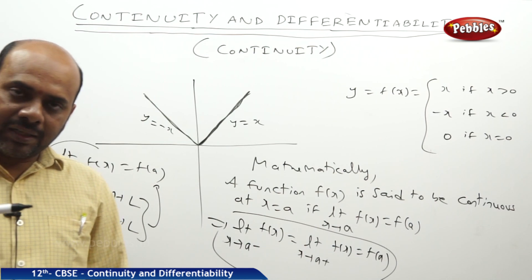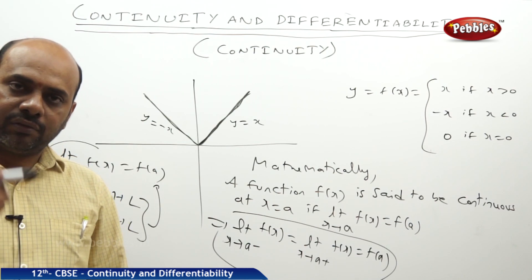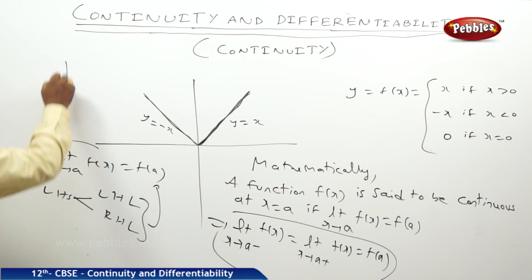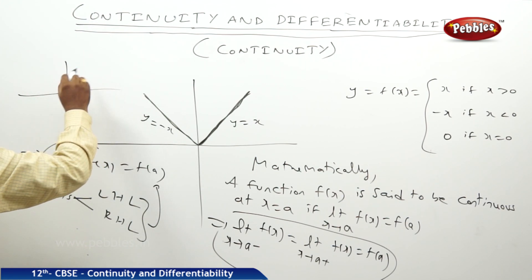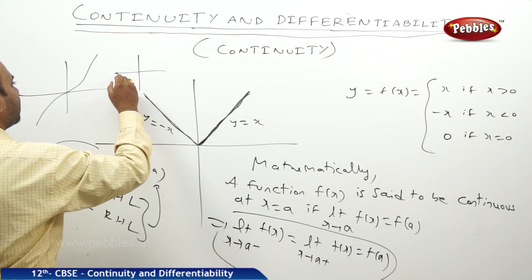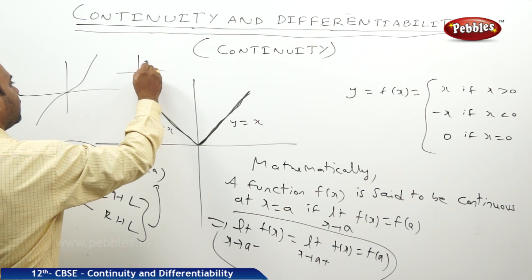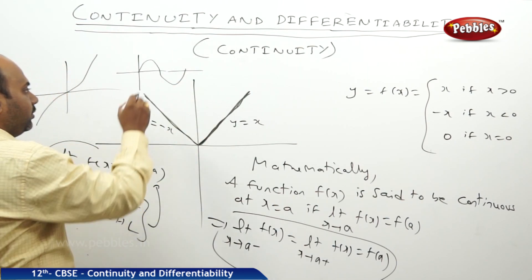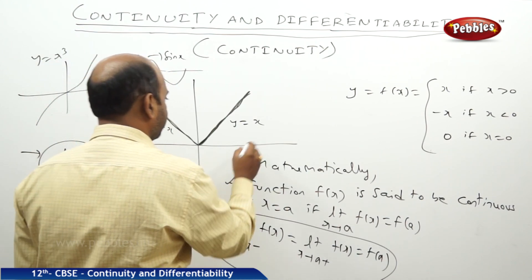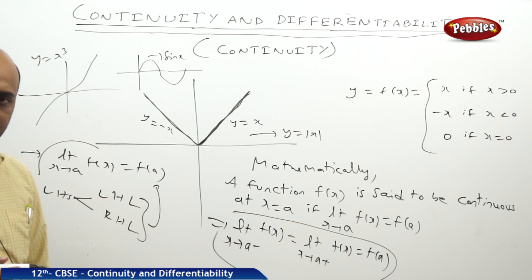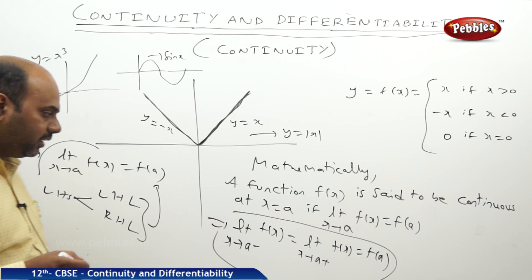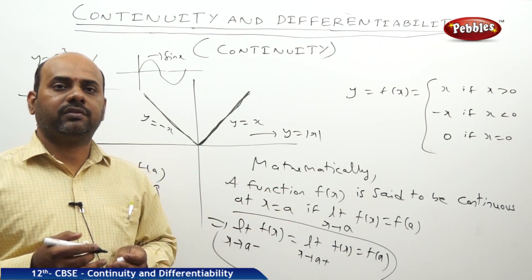Two things to remember: graphically, when you draw a graph you should not lift the pen — the curve should go on continuously. Good examples include y = x², the sine x curve, y = x³, and y = |x|. All these curves are continuous because we are not able to lift the pen while drawing them. Mathematically, we show that limit x→a of f(x) equals f(a).